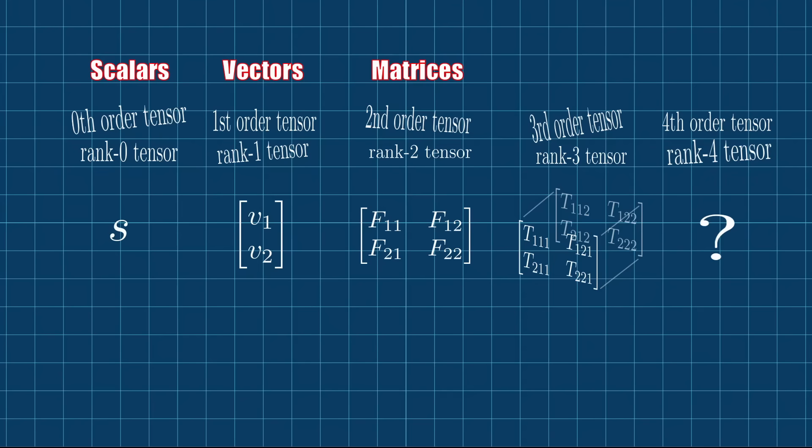So, one way to get around this is by using index notation. The components of the vector may be denoted by vi, where i is either 1 or 2 in this two-dimensional example. The components of the matrix can be denoted by fij, where i and j are either 1 or 2. And the components of the third-order tensor can be denoted by tijk. And so on. Index notation is useful for several reasons. For example, it's quite convenient to manipulate equations in index notation. And it's also nice that we can immediately see the order of the tensor.